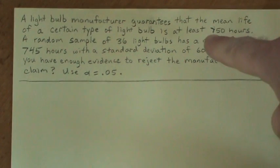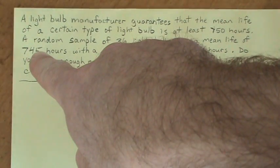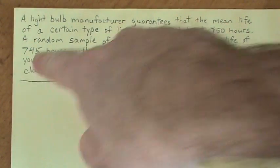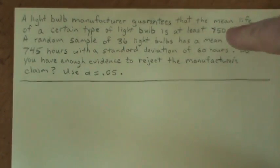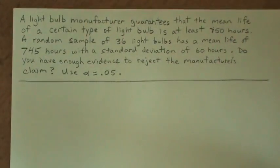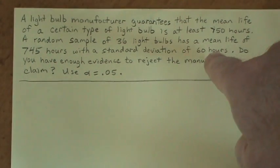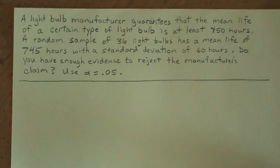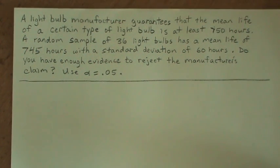The question is, do you have enough evidence to reject the manufacturer's claim? Remember, their claim was that you should be able to get at least 750 hours out of that. Now in our sample of 36 light bulbs, we didn't get an average of 745 hours—some might have been more than 750 hours, some were less, and it averaged out to be about 745 hours. Now there was a standard deviation of 60 hours, so there was some spread among all the data.